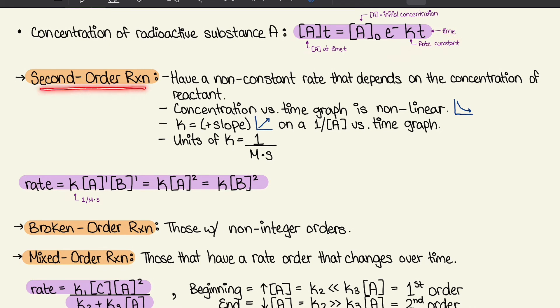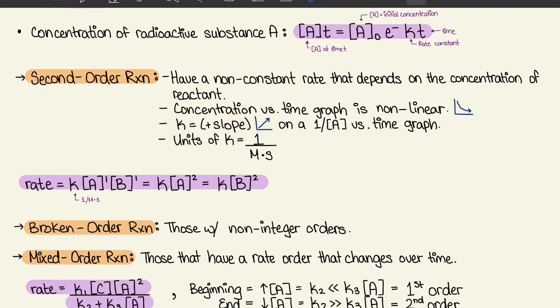For a second order reaction, they also have a non-constant rate that depends on concentration, and the concentration versus time graph is also non-linear. However, K has a positive slope on a 1/[A] versus time graph. The units for K are one over molarity times second. The rate equation can be written as rate equals K[A][B], or simply K[A]² or K[B]².